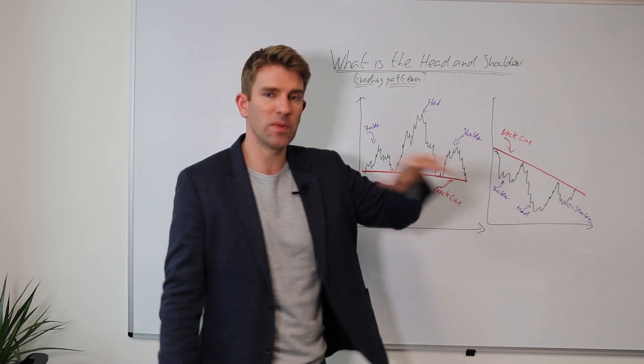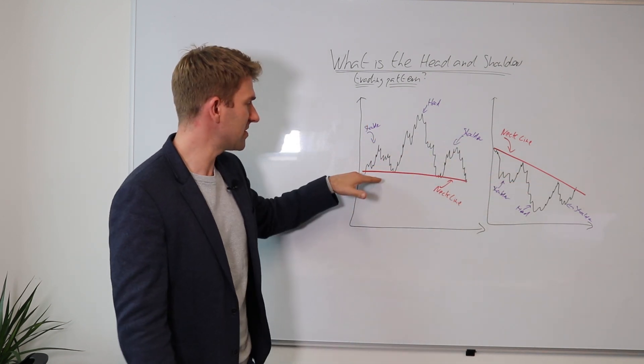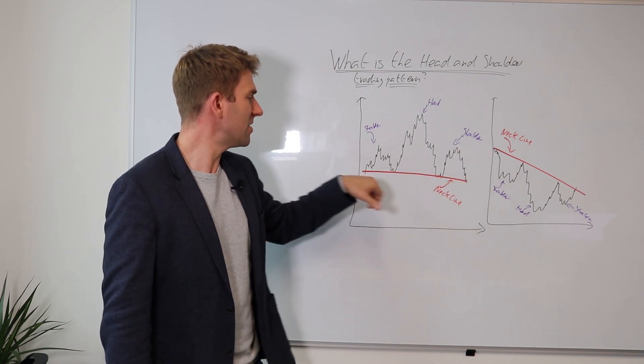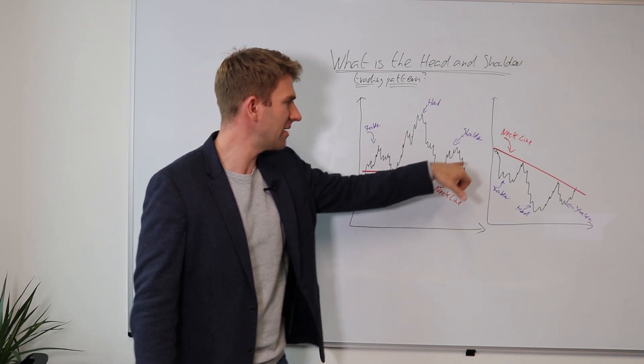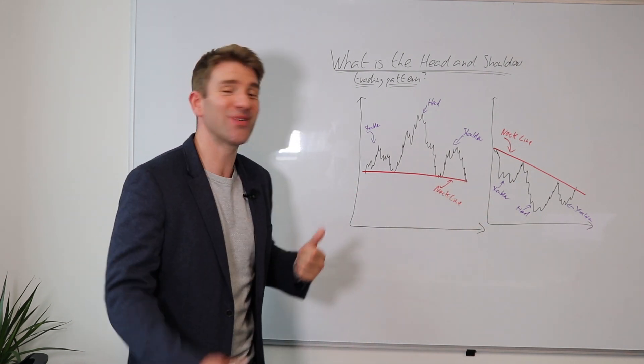If we're looking at an inverse head and shoulders, it's the same but just flipped. You might wonder why that's sloping, we'll talk about that in a moment. Another thing to point out is where the lows meet - the low of the shoulder, the low of the head, the low of the shoulder. That's called the neckline for obvious reasons.